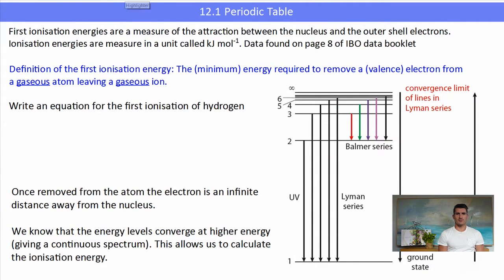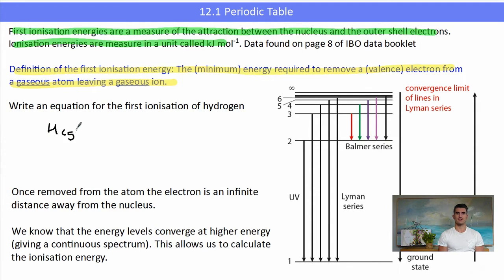So a very quick refresh of Topic 2 on ionization energies. Remember ionization energies are a measure of the attraction between the nucleus and the outer shell electrons, and the ionization energy is measured in kilojoules per mole. The data is on page 8. Key definition that you need to know: ionization energy, the minimum amount of energy required to remove a valence electron from a gaseous atom to form a gaseous ion. So if we have hydrogen gas then we can ionize it to form a hydrogen ion in the gas phase, minus 1 electron.